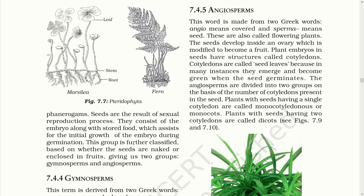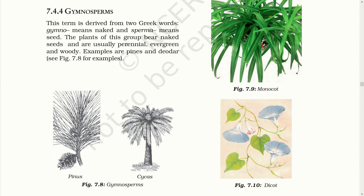This group is further classified based on whether the seeds are naked or enclosed in fruit, giving us two groups: Gymnosperms and Angiosperms. Gymnosperms — this term is derived from two Greek words: Gymno means naked and sperma means seed. The plants of this group bear naked seeds and are usually perennial, evergreen and woody. Examples are pines and deodar.